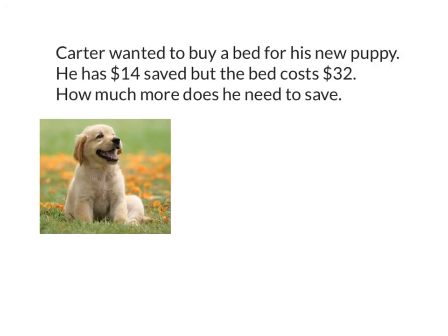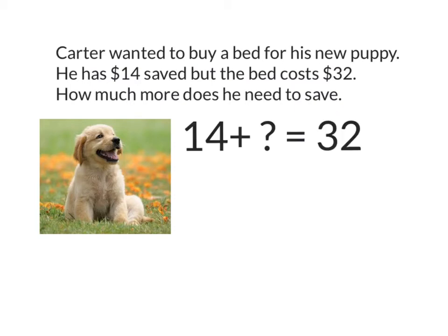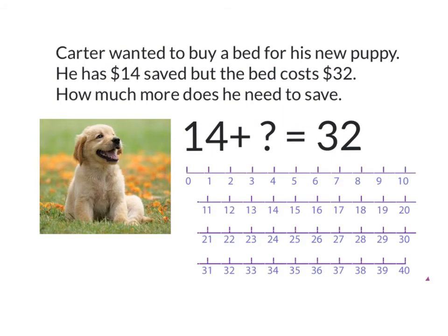Let's have a look at another way that we can solve these change-unknown problems. Here's my problem: Carter wanted to buy a bed for his new puppy. He has $14 saved, but the bed costs $32. How much more does he need to save? This is how I would write that as a number equation. I'm going to solve this change-unknown question using partitioning up through tens, and I'm going to use this number line here to help me.